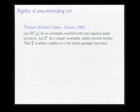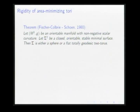The theorem is the following. Let N be an orientable manifold with non-negative scalar curvature, and suppose it contains a closed, orientable, stable minimal surface sigma. This means sigma is a critical point of the area functional, and the second derivative of area is non-negative for all variations. Then the conclusion is that sigma must be either a sphere or a totally geodesic flat torus — both geometrical and topological restrictions.